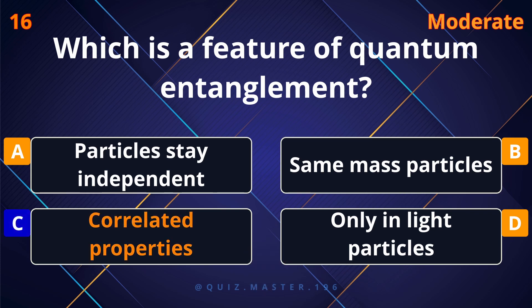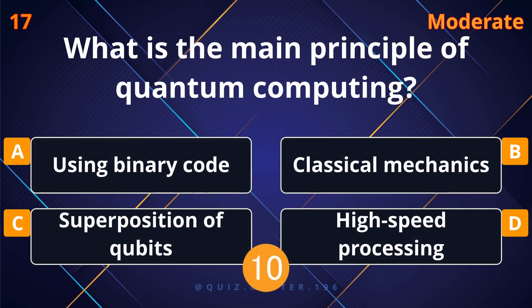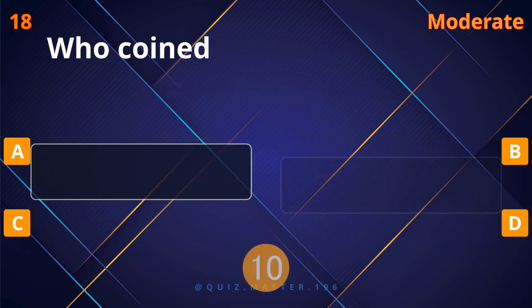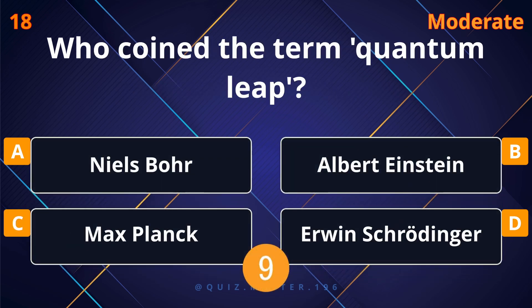Which is a feature of quantum entanglement? Correlated properties. What is the main principle of quantum computing? Superposition of qubits.